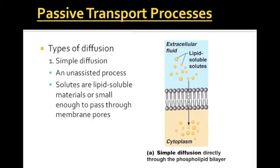Diffusion is high to low concentration. If there is an equal amount on the outside and inside, there won't be any movement across the cell membrane. Or if there's a larger amount on the inside, it will diffuse out of the cell. For this to happen, the solutes moving through the plasma membrane have to be lipid soluble and small enough to pass through.